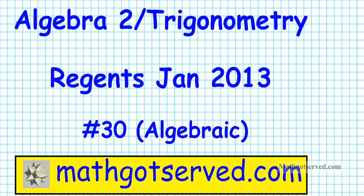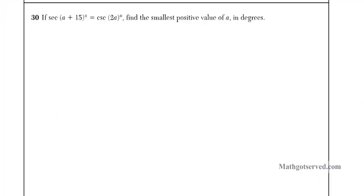Some students requested the algebraic solution to number 30. I did it graphically but I just wanted to show you what the algebraic solution looks like. So for number 30 we are told that secant alpha plus 15 is equal to cosine 2a, find the smallest positive value of a in degrees. So this result involves the intersection of two trigonometric curves, two asymptotic trigonometric curves and there are infinite number of solutions, infinite number of intersection points.